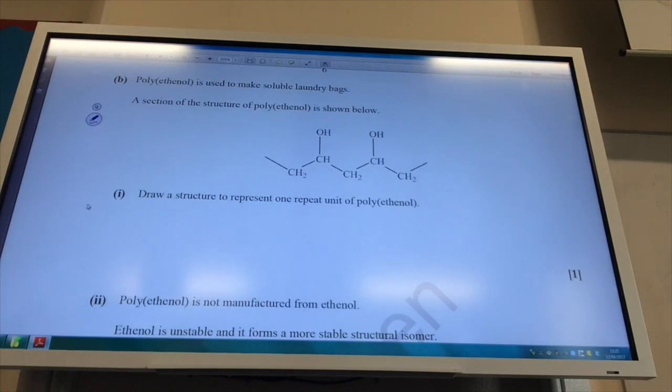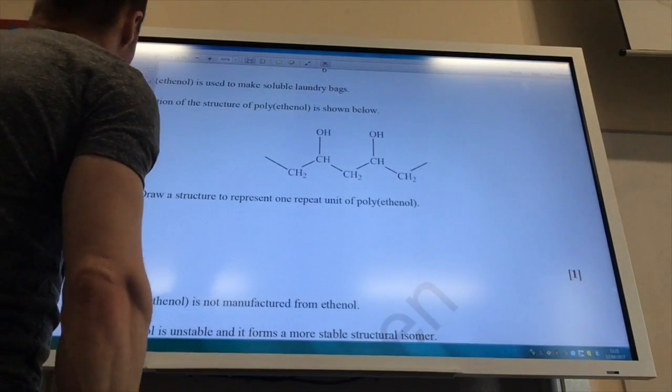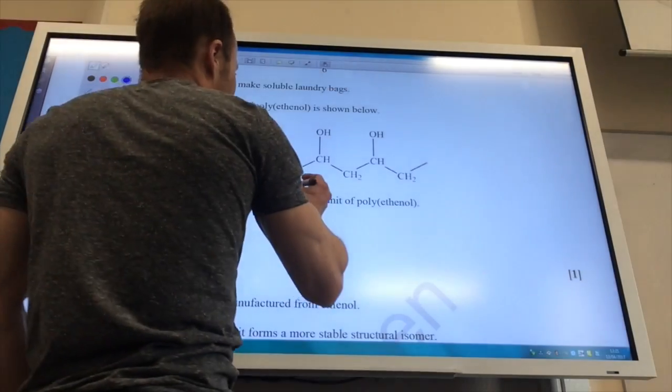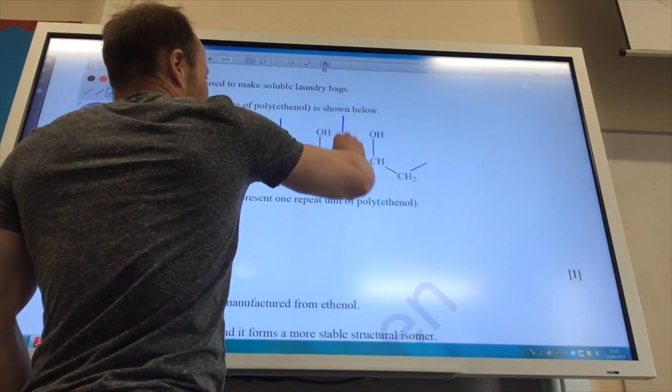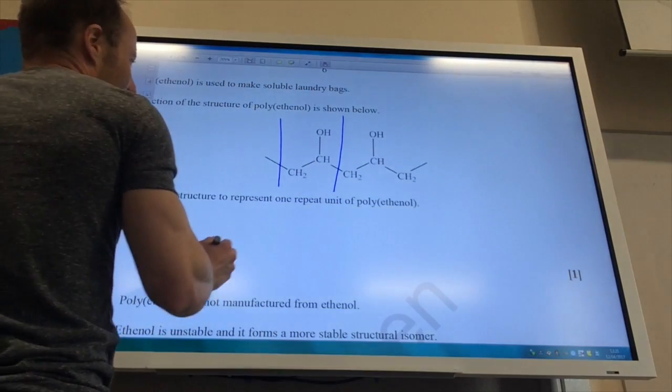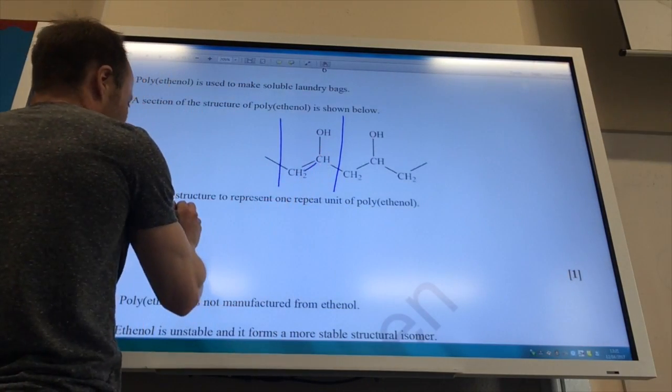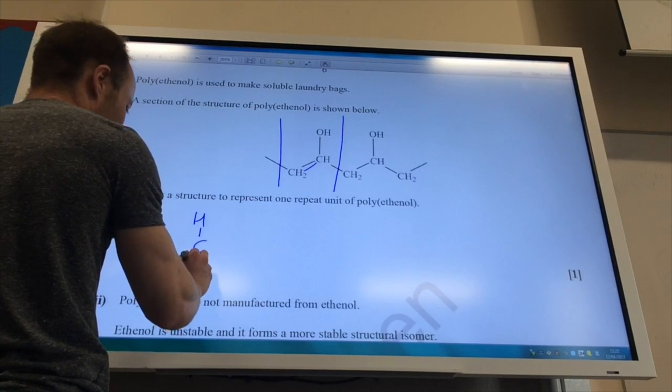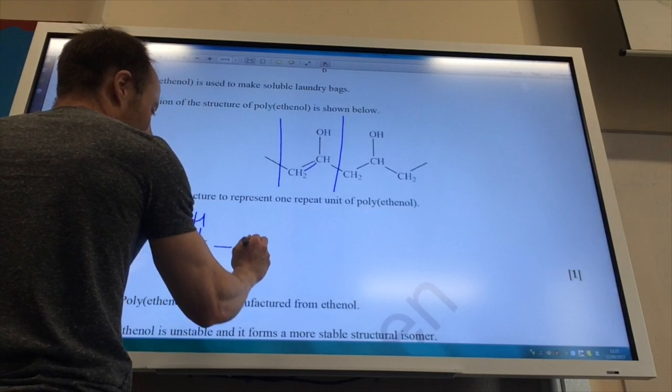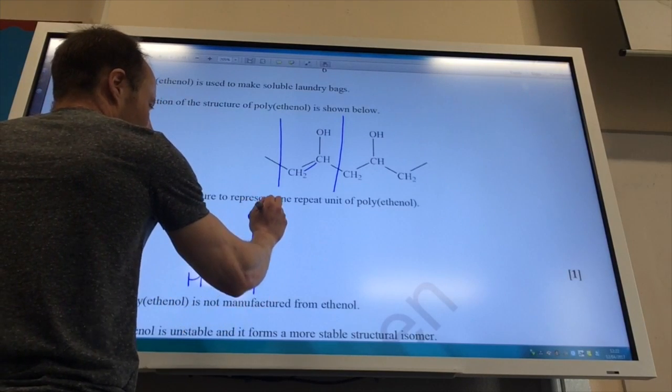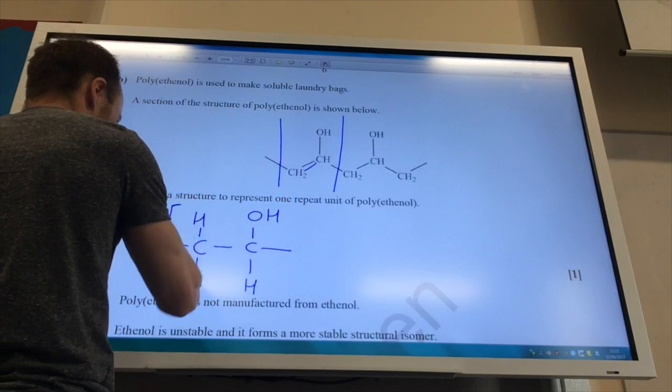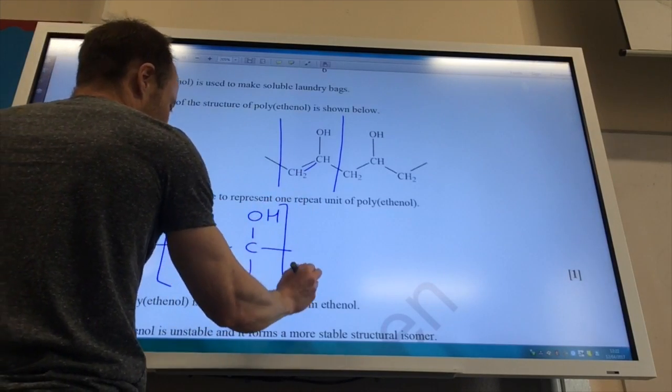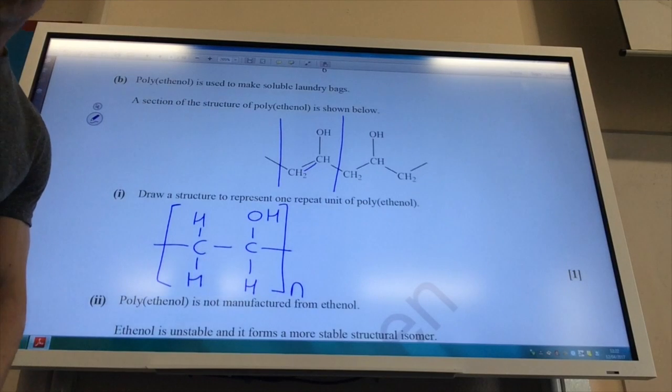So polyethanol is used to make solid laundry bags. Draw the structure to represent a repeat unit. Okay, so if you have a look at it, that's my repeat unit, isn't it, going on. So I need to put a double bond between there. So it's going to be, and then do your lines like so, brackets, and then your little end like so.